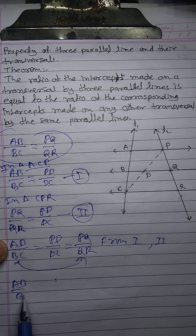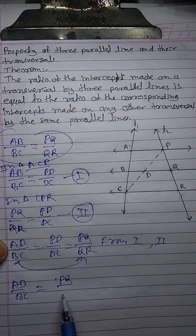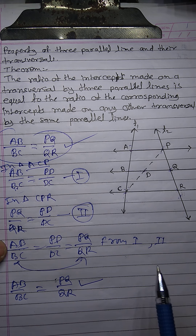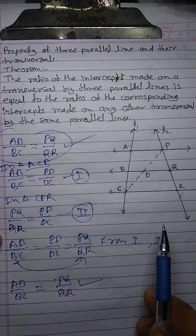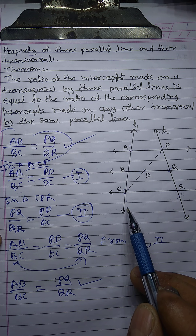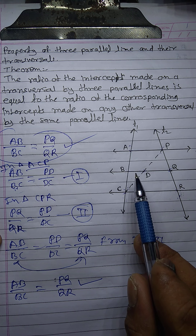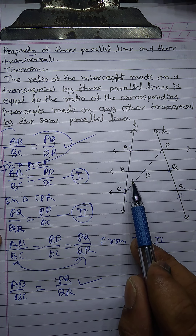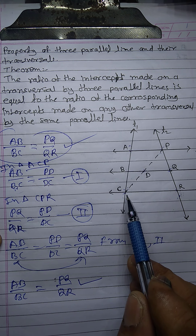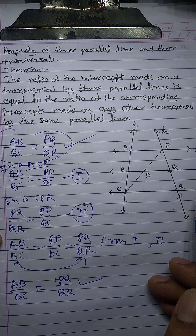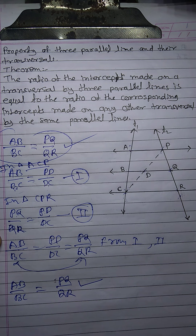So, AB upon BC is equal to PQ upon QR. This is the theorem of three parallel lines. To summarize: there will be three parallel lines, two transversals intersecting those three parallel lines, and the ratio of intercepts on one transversal will equal the ratio of intercepts on the other transversal.